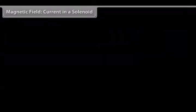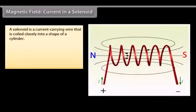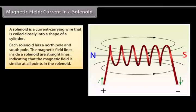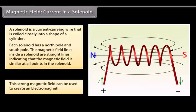Magnetic field: Current in a solenoid. A solenoid is a current carrying wire that is coiled closely into a shape of a cylinder with the turns as close together as possible. This is similar to a bar magnet. Each solenoid has a north pole and south pole. The magnetic field lines inside a solenoid are straight lines and indicate that the magnetic field is similar at all points in the solenoid. This strong magnetic field in the solenoid can be used to magnetize magnetic materials. This type of a magnet is called an electromagnet.